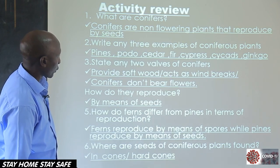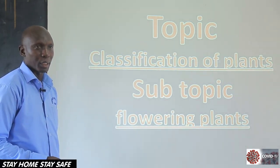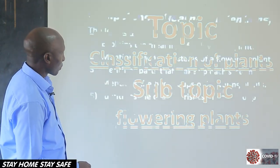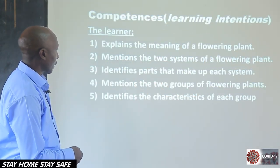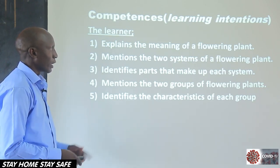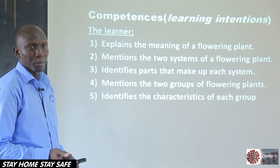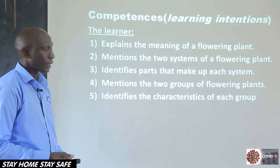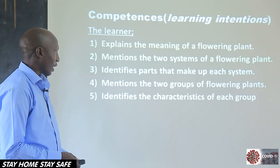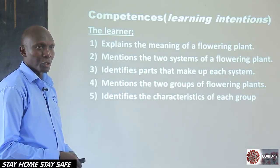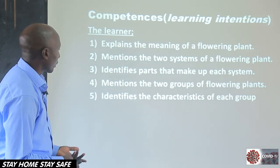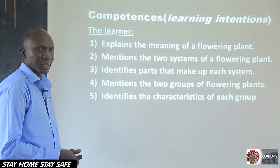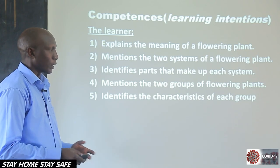So let's start right away, children. We said today we are looking at the flowering plants. By the end of the lesson, you would have known what a flowering plant is; be able to name the two systems of a flowering plant; identify the parts that make up each of those systems; name the two groups of flowering plants; and state their characteristics. That's what we want to look at in these few minutes we have.